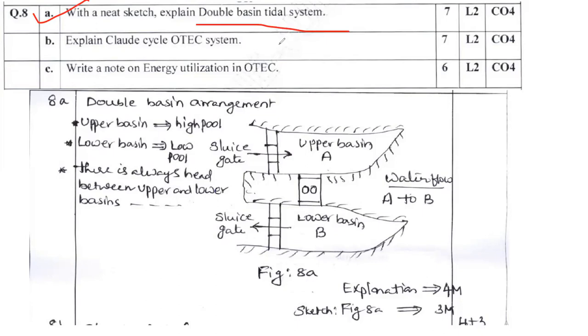In the previous session we discussed about single basin tidal system. It's applicable only during the high tide. If I go for high tide and low tide at both times I can generate electrical power. That's the specialty of double basin arrangement. How the double basin operates in this fashion. You can see the control valve that is also known as sluice gate.